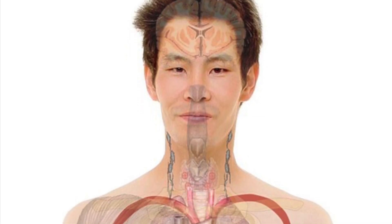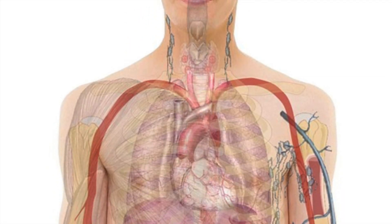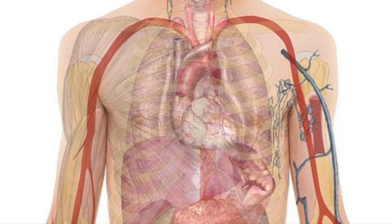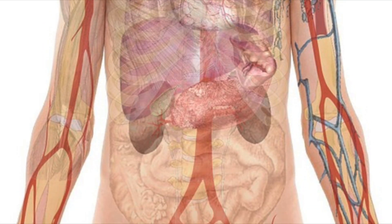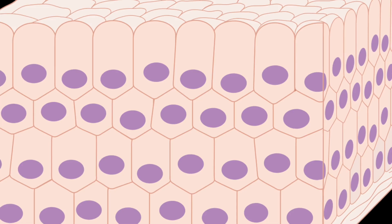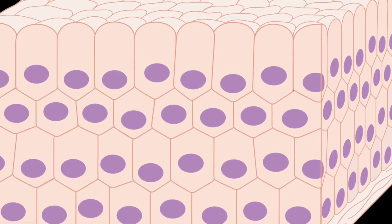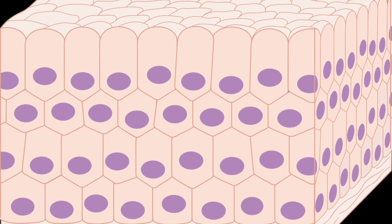This is I'm Sark and in this video we're looking at tissues, organs and organ systems. So first of all we'll look at tissues. A tissue is a group of cells of a similar function which work together.